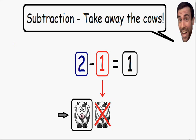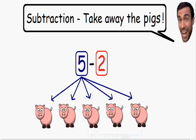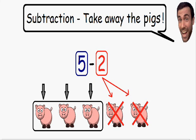Let's go over another example by taking away the pigs. Here we have five minus two. So we're starting with five pigs and we are subtracting two, which means we are taking away two pigs. So if we start with five and we take away two, how many pigs do we have left over? Well we have three pigs left over. So five minus two is equal to three.